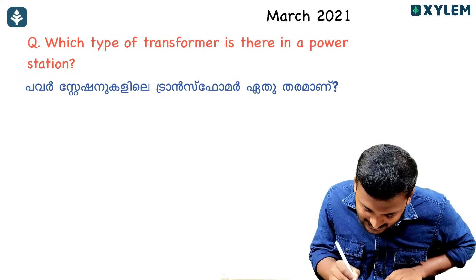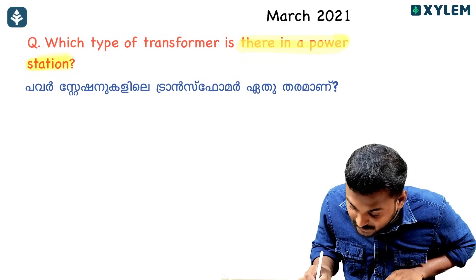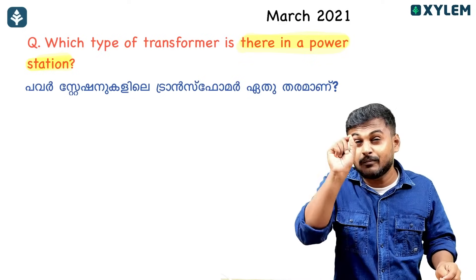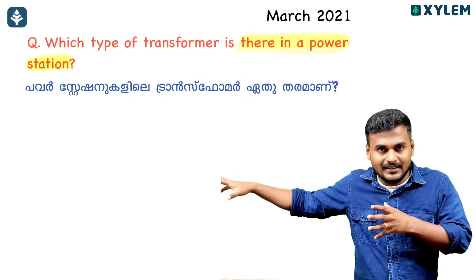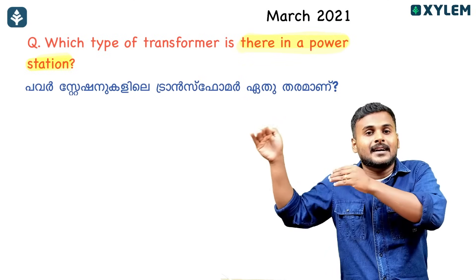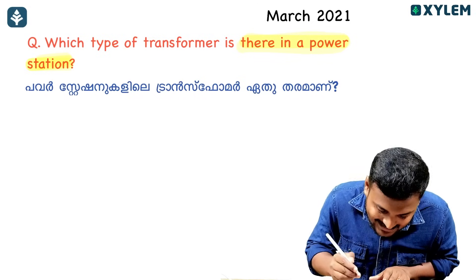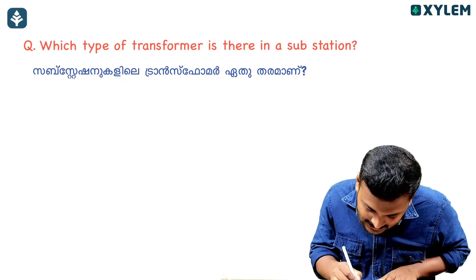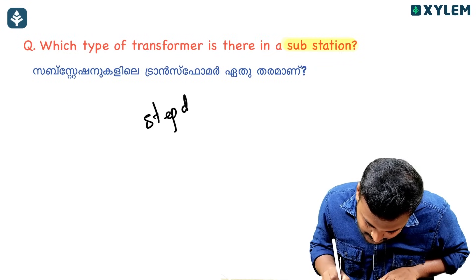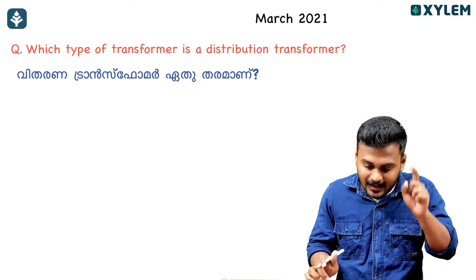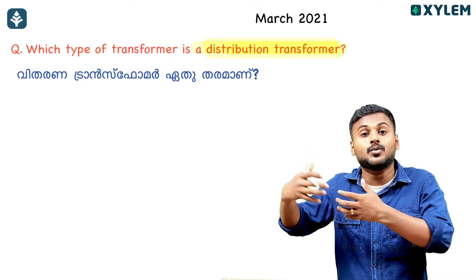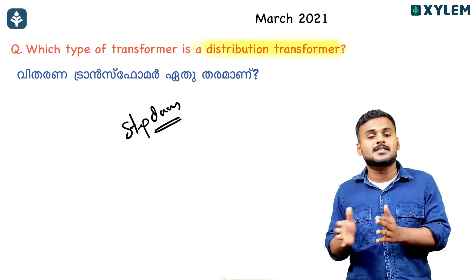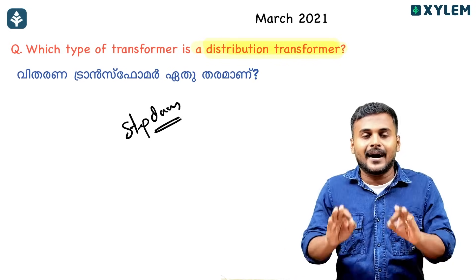Which type of transformer is used in a power station? The power station generates 11kV. To transfer this power, the transformer increases the voltage — this is a step-up transformer. At the distribution stage, a step-down transformer is used to reduce the voltage.